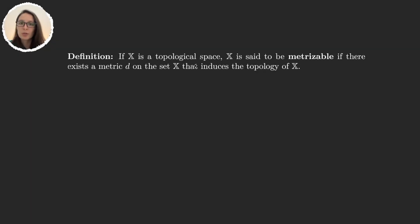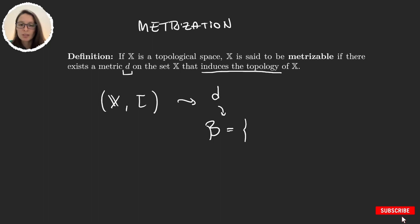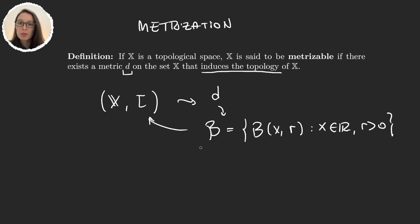In this video we're going to focus on one of the most important definitions in topology, and that is metrization. We say that a topological space is metrizable if there exists a metric that induces the topology on X. So if I can find a metric such that the basis, with center in X and some radius r, induces the same topology we had originally, then we say that the topological space is metrizable.